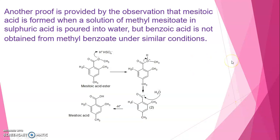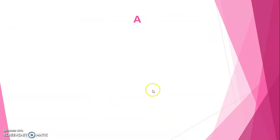Another proof is provided by the observation that mesithoic acid is formed when a solution of methyl mesithoate and sulfuric acid is poured into water, but benzoic acid is not obtained from methyl benzoate under similar conditions. So when we add mesithoic ester to sulfuric acid, sulfuric acid protonates here and this is followed by splitting to produce acylium carbonium, and this acylium carbonium is attacked by water when it is poured into water and it forms mesithoic acid.